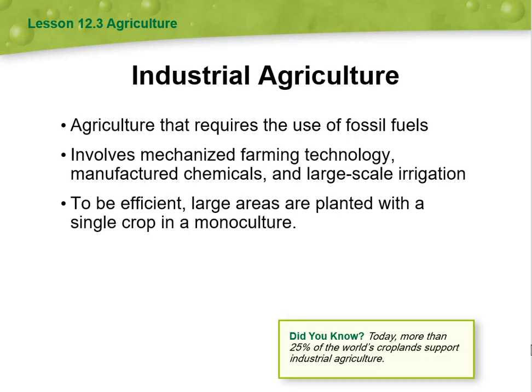Industrial agriculture requires the use of fossil fuels and involves mechanized farming technology, manufactured chemicals, and large-scale irrigation. To be efficient, large areas are planted with a single crop in a monoculture.